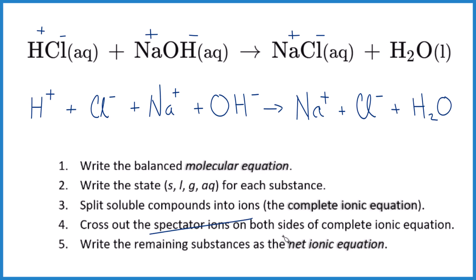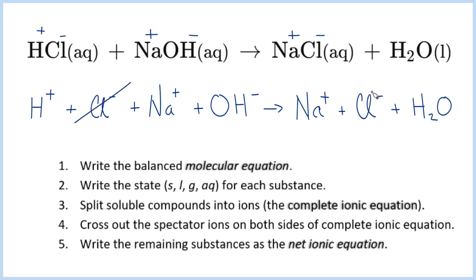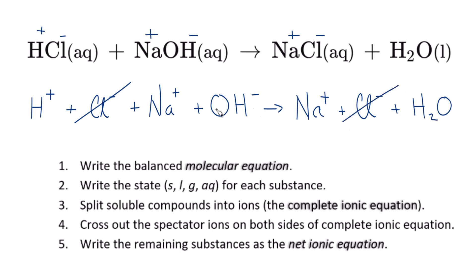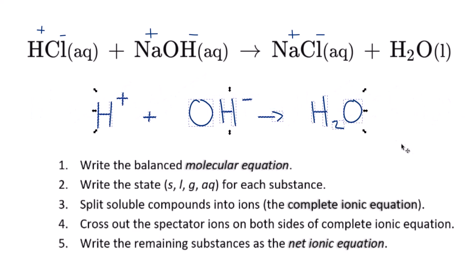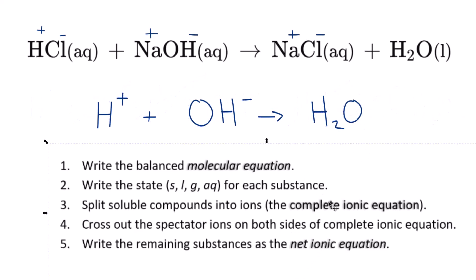Now we cross out the spectator ions — they're on both sides. Chloride ion here and over here. Sodium here and here. But everything else is different, that's unique. So that's our net ionic equation. Let's clean it up. This is the balanced net ionic equation for HCl plus NaOH.